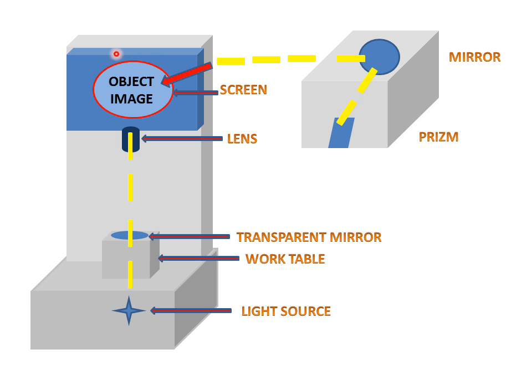There we will get the object image. This is the working of the profile projector in which we can put an object on the transparent mirror and by the projection of the light, the enhanced view of the object we will see here. From there we can measure its dimension, length, width, angle. This is the working of the profile projector. Thank you.